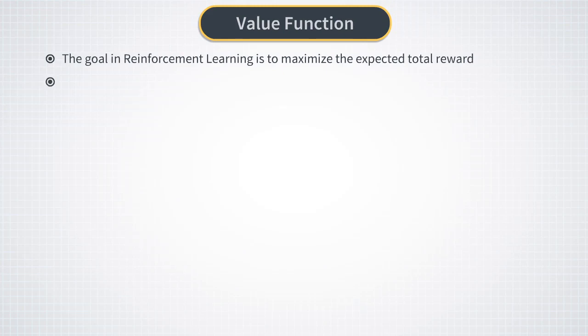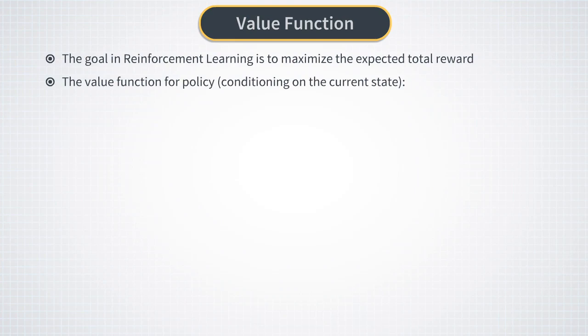Such conditional expectation of the total cumulative reward is called the value function. For each possible state st, the value function gives us the value of the state for our ultimate task of maximizing the total reward using policy pi. The state st is therefore an argument of the value function.